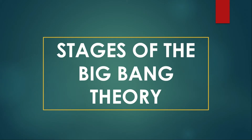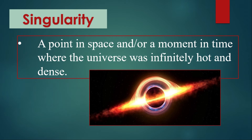Now let's go deeper into the stages of the Big Bang Theory. The first stage is the singularity. Like I said, singularity is a hot, dense, tiny state, also the size of an atom. Singularity is a point in space or a moment in time where the universe was infinitely hot and dense. Everything started from a singularity.